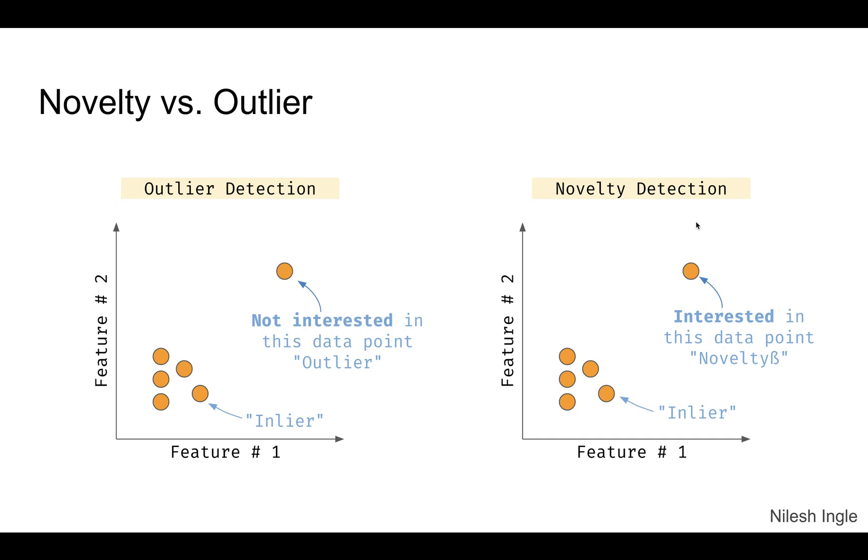To begin with, what is the difference between novelty and outlier? Let's say we have a couple of data points shown here in the left figure. We have this set in the bottom left and then we have this one point that's away from this cluster. If we are looking at a data set where this particular point is of interest, then we would consider it as a novelty as shown in here.